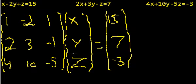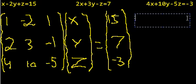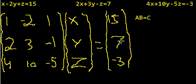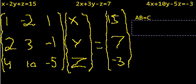So let's think about this as A times B equals C. We know A and we know C. We're trying to find B.